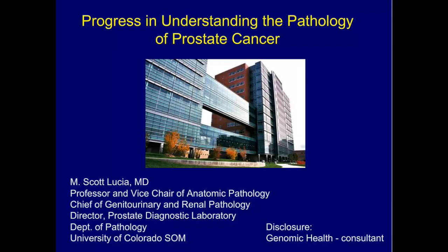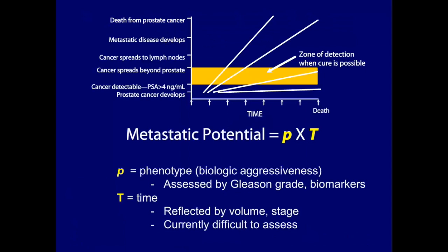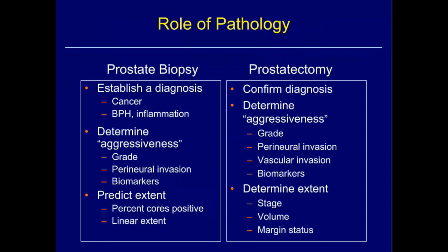My talk is on progress in understanding the pathology of prostate cancer. The metastatic potential of any tumor is really the basic phenotype — the biologic aggressiveness — times time. We don't reflect time very well in the prostate because we don't have good imaging modalities to follow it, so we have to put a lot of emphasis on assessing the biologic aggressiveness of the tumor. For a pathologist, that role has been key.